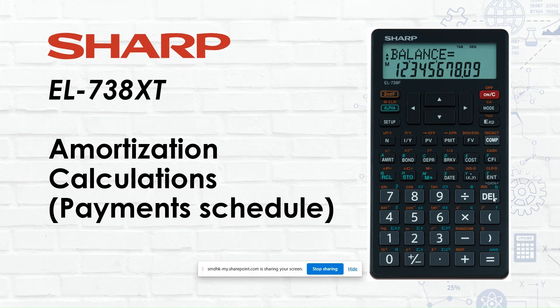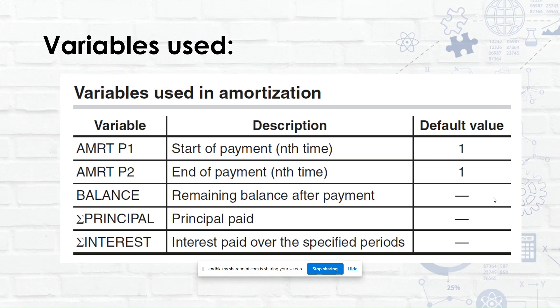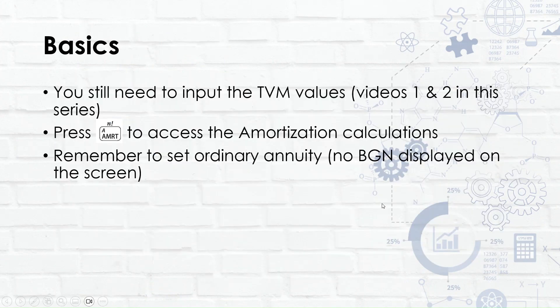Welcome to this video on amortization calculations, the third one in our series. The variables we're going to be using, apart from the TVM variables, are: amortization payment one (the first payment), when the first payment starts, when the last payment is made, balance, principal, and interest. Remember that you still need to put your TVM values into your calculator — this was covered in videos one and two. You'll use the AMRT or AMORT button to access the amortization calculations.